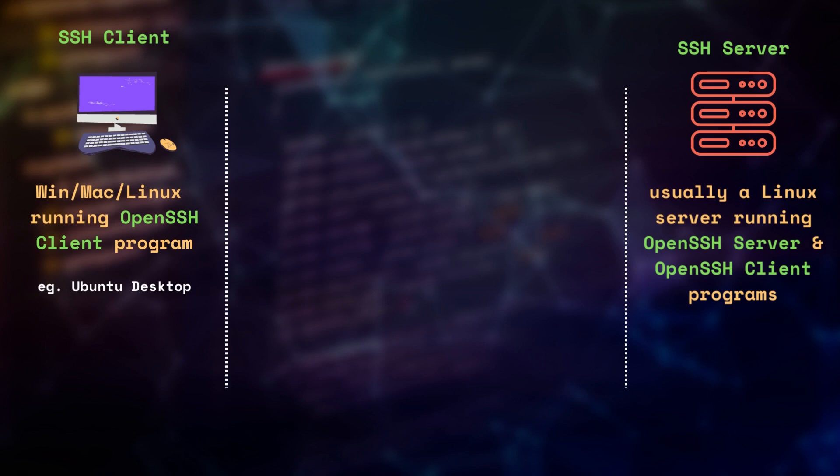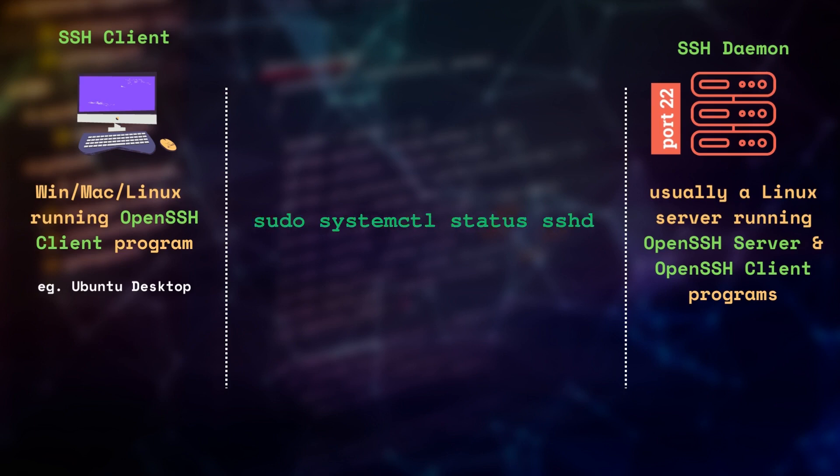The SSH server process is also called SSH daemon or SSHD, which listens on port 22 for incoming connections. On Ubuntu and Debian systems, you can check the process status using the systemctl command.